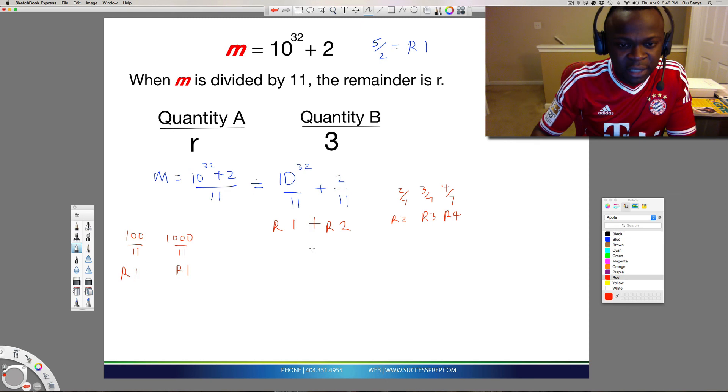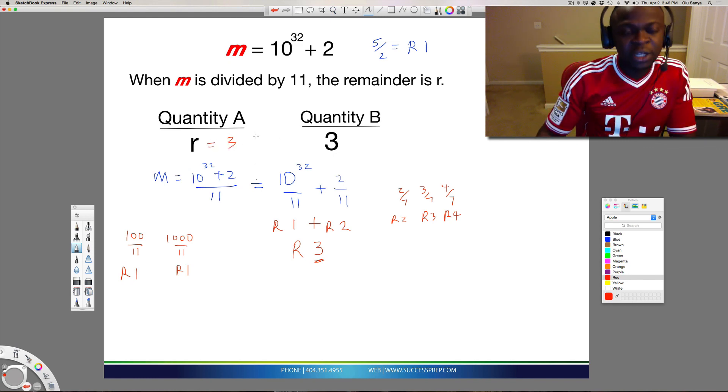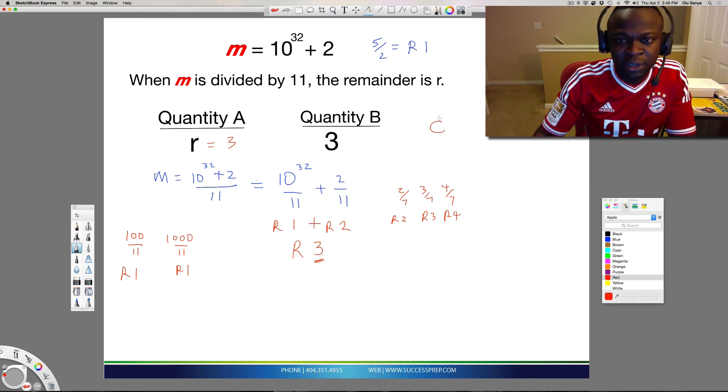Well, based on this, you just add these two. So the remainder when you do this whole division should just be 3. And as you can see in this case, that means this R is 3. And in quantitative comparison on the GRE, when the two values are the same, the final answer to this question is C. So the answer to this question is C and that's how you do this question. Thank you.